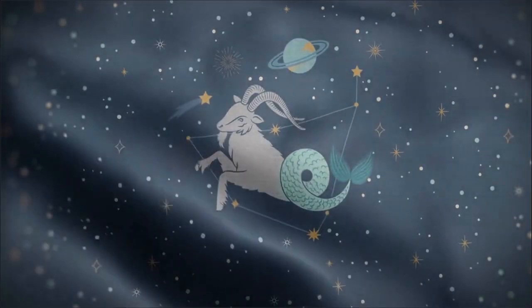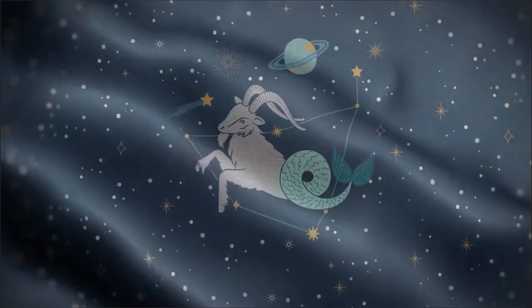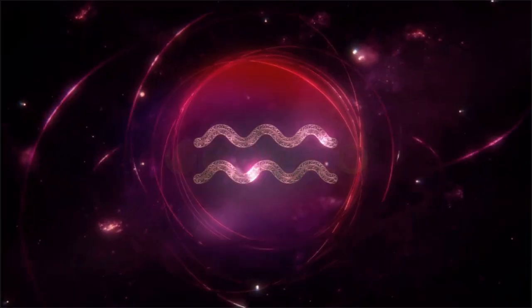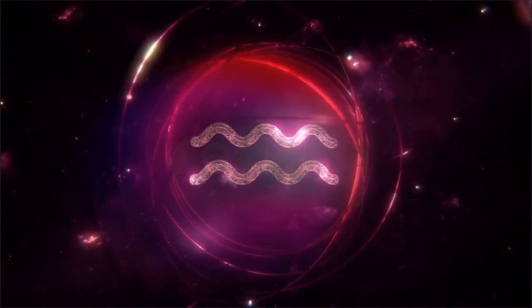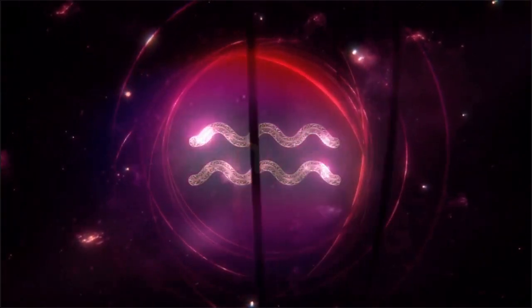The new moon on October 14 at 20:59 Kiev time, and this time a solar eclipse, opens a new lunar month, half of which is a corridor of eclipses.